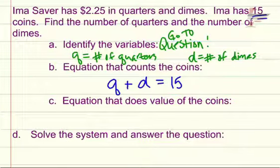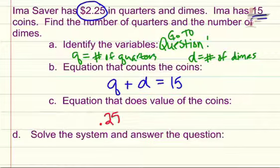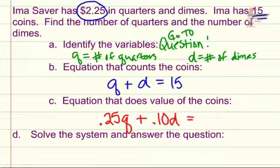Part C, we need an equation that does the value of the coins. So the value is how much is it worth. Do we have any of those total numbers in the problem? She has a total of $2.25 when she adds up all of her quarters and dimes. What is a quarter worth? A quarter is 25 cents, so we have .25 times every quarter, plus dimes are 10 cents, so .10 times every dime. When she adds up all these values, she gets a total of $2.25.